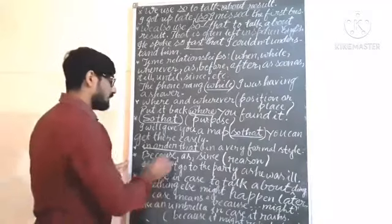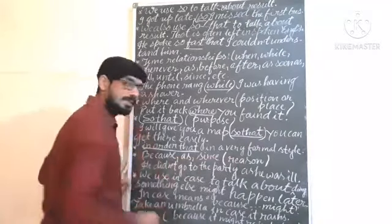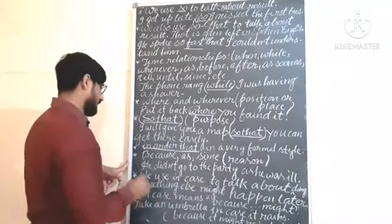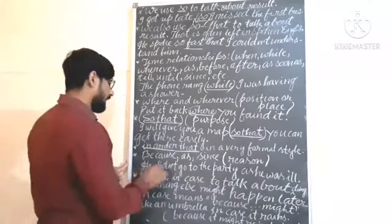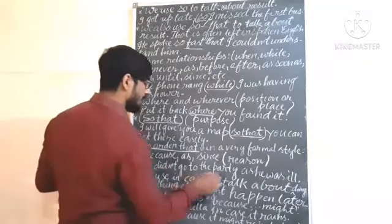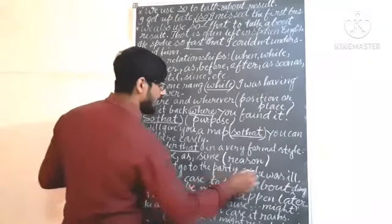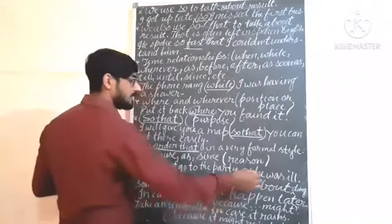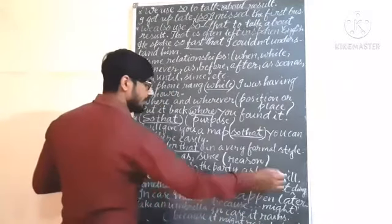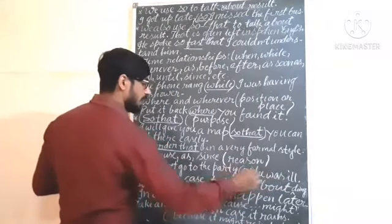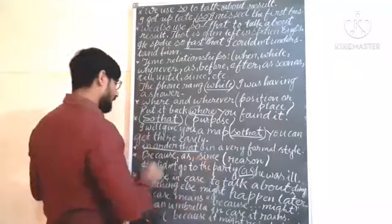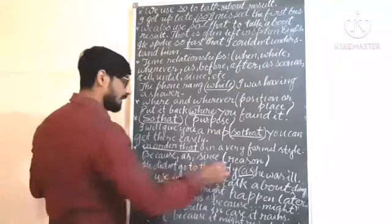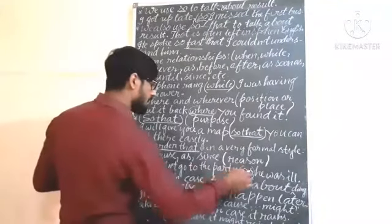Now 'because', 'as', and 'since' — we use these for reason. See the example: 'He did not go to the party as he was ill.' The reason is that he was ill. For reason we use 'as'. Similarly: 'He did not go to the party because he was ill.' We can use 'as', 'because', or 'since' interchangeably for reason.